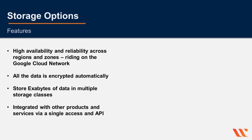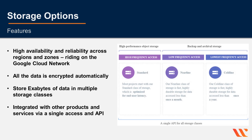However, the latency and performance depends on the regions and zones these are provisioned in. All the data is encrypted to the required standards automatically once it's stored as well as transported. Some of these products let you store exabytes of data, and the cost to store and access depends on the storage class you choose — less frequency equals less cost. This is similar to Amazon Web Services, where you have Standard, Nearline, and Coldline storage classes.